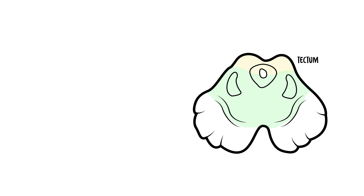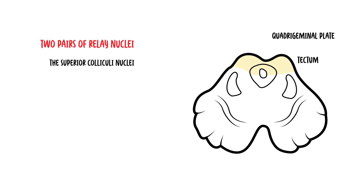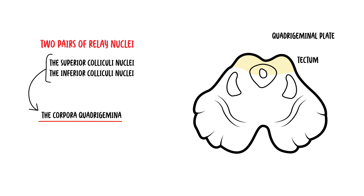The other major part of the midbrain is the tectum, also known as the quadrigeminal plate. It consists of two pairs of relay nuclei: the superior colliculi and the inferior colliculi. Collectively, these are called the corpora quadrigemini. The superior colliculi are involved with the processing of visual information, whilst the inferior colliculi are involved with the processing of auditory information.